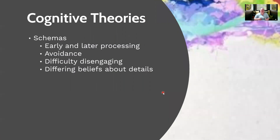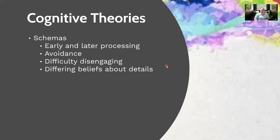This concept actually relates to some different cognitive theories. There's this concept of schemas, which in short is basically beliefs that we have about ourselves, about the world, about others — thinking patterns that we have. Some researchers think that people with anxiety have thought patterns that are more attuned with threat or more focused on threatening information, and that this happens early and later after they see threatening information. Some researchers think it's because they're avoiding or having difficulty disengaging.